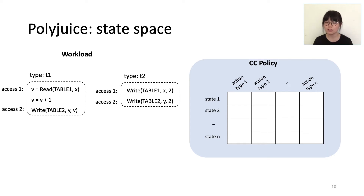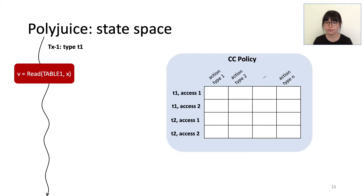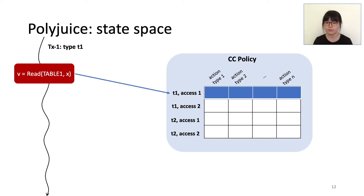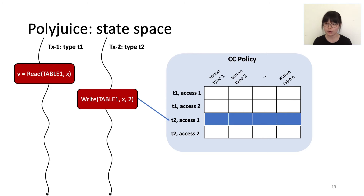This workload corresponds to a policy table with four rows — each row enumerates a transaction type and access ID. At runtime, suppose a worker thread is executing a transaction of type T1 and about to make the first data access. The worker will first consult the policy table with the state value, which is type T1 and access 1, and the corresponding row tells the worker which concurrency control actions to take.